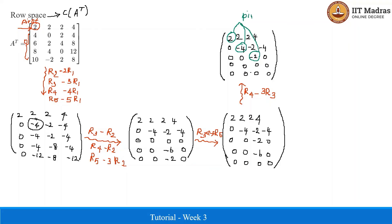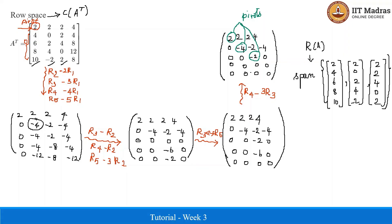The columns corresponding to the pivot values — columns 1, 2, and 3 — are identified as the vectors of the row space. Therefore, R of A is the span of these three vectors, which are the corresponding row vectors of the original matrix A. The dimension of R of A equals 3, which also equals the rank of the matrix.